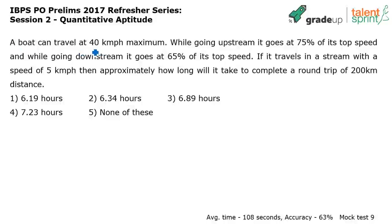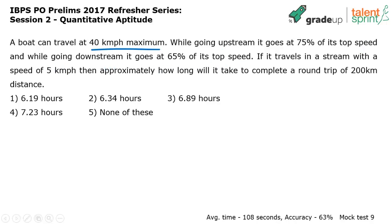A boat can travel at 40 kilometers per hour maximum — that's the top speed. While going upstream it goes at 75 percent of its top speed, and while going downstream it goes at 65 percent of its top speed. So what is the top speed? 40 kilometers per hour.